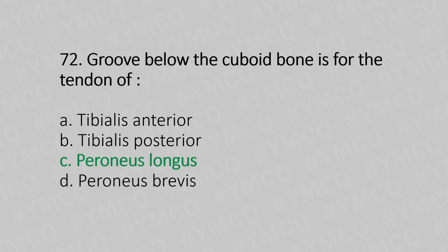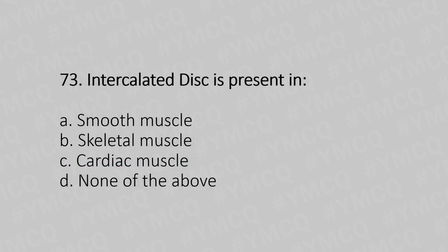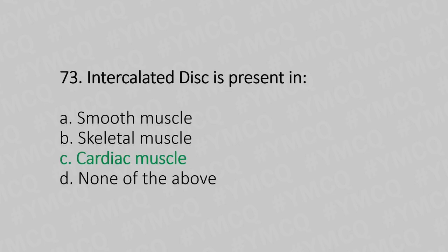Question 73: Intercalated disc is present in — Option A: smooth muscle, Option B: skeletal muscle, Option C: cardiac muscle, Option D: none of the above. The answer is Option C, cardiac muscle.